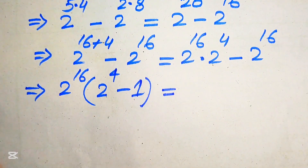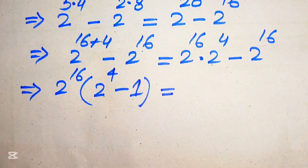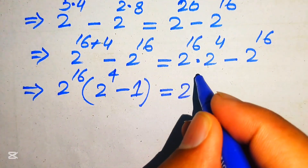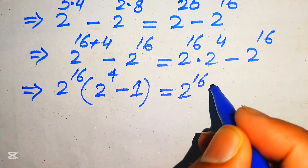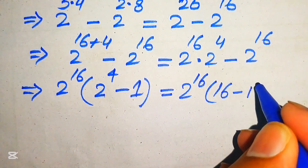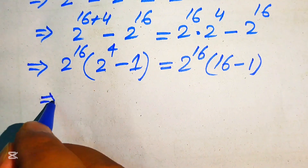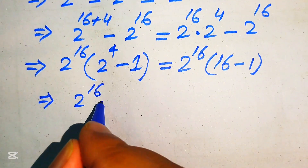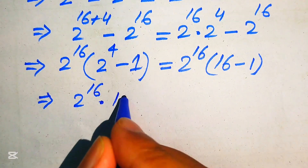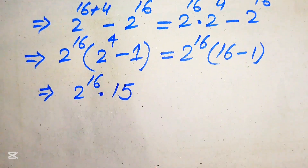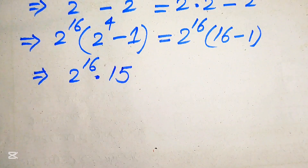We know that 2 to the power of 4 equals 16, so we write it as 2 to the power of 16 times (16 minus 1), which gives us 2 to the power of 16 multiplied by 15.